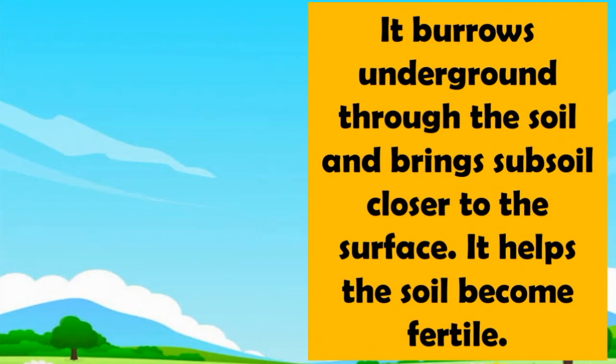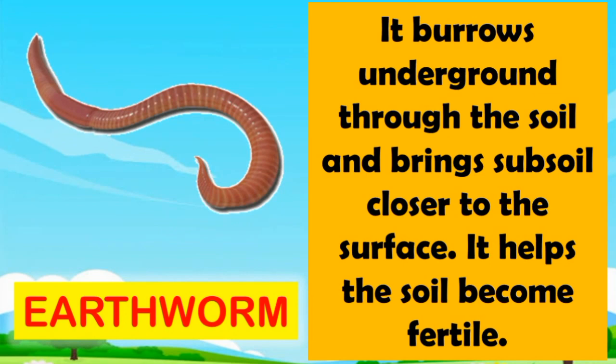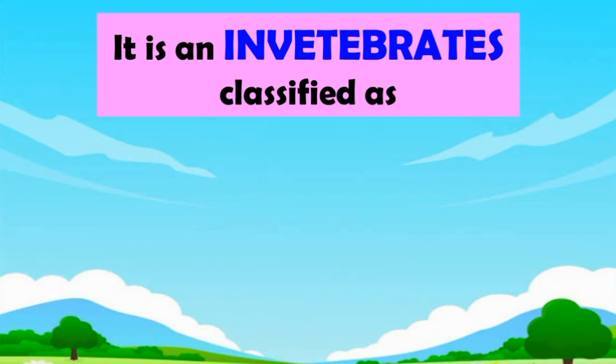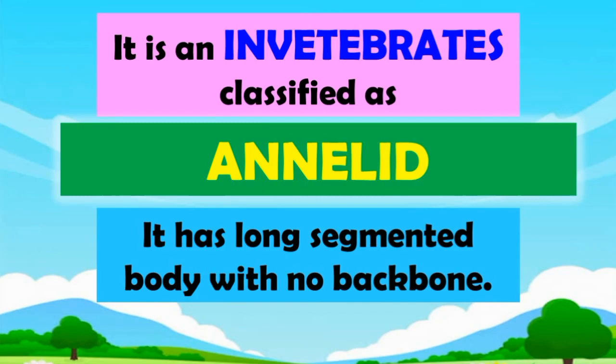Guess what? It burrows underground through the soil and brings subsoil closer to the surface. It helps the soil become fertile. What is it? Earthworm! Correct! Earthworm is an invertebrate classified as annelid. It has a long segmented body with no backbone.